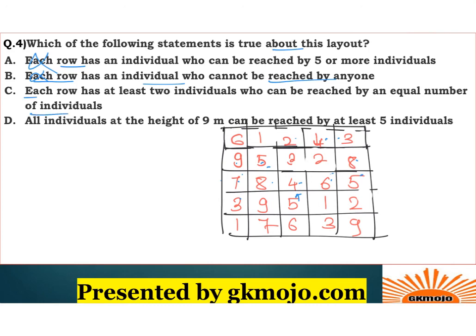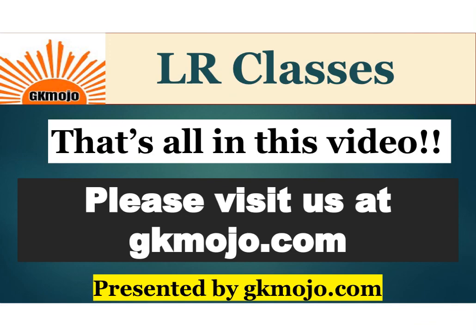We're left with options C and D. Option D says all individuals at height nine can be reached by at least five individuals. There are only a few nines — let's check one: it can be reached by three, two, six, and five using the ACB condition, but no one else — only four people can reach that nine. So option D is wrong. Hence automatically option C is the correct choice, and you don't even have to verify it. That's it for this video — please visit us at gkmojo.com. Thank you.